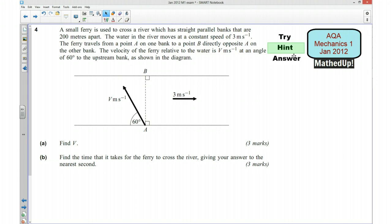Okay, wondering if you managed to have a go at that. I'm now going to go over a hint as to how you can go about answering the question. We've got a small ferry and it's used to cross a river which has straight parallel banks that are 200 metres apart. The water in the river moves at a constant speed of 3 metres per second. The ferry travels from point A on one bank to point B vertically opposite A on the other bank, and the velocity of the ferry relative to the water is V metres per second at an angle of 60 degrees to the upstream bank.